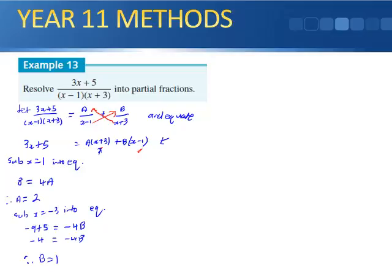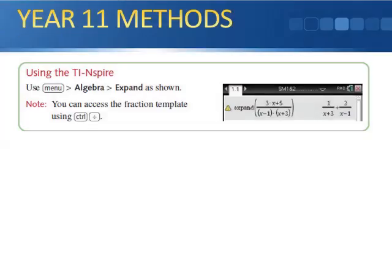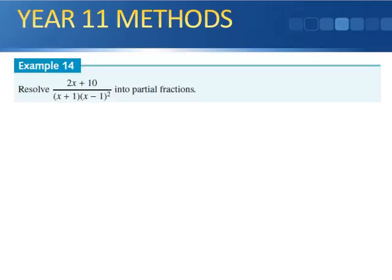You can also do it on your calculator using menu, algebra, and expand, and it gives you the results. Example 14: resolve (2x + 10) divided by (x + 1)(x - 1)² into partial fractions. Here we have a squared factor in the denominator, so we need to be careful.